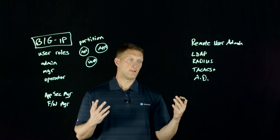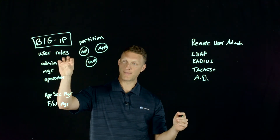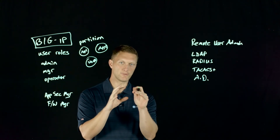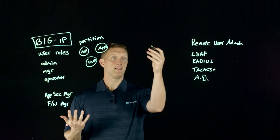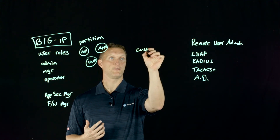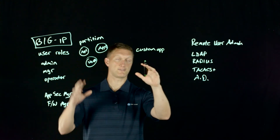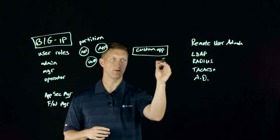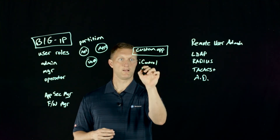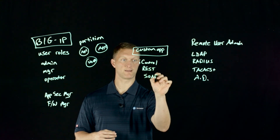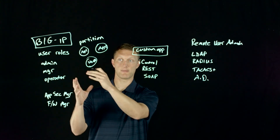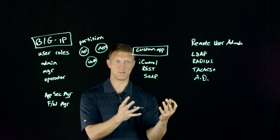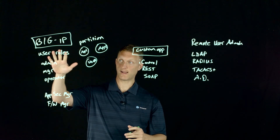Some people say they don't want full admin permissions but want something more than the manager role — they need a configurable, custom role. In that case, you could build your own custom app — almost like a middleware — that interacts with the BIG-IP. You can do that via iControl REST or the SOAP-based iControl. That custom app communicates with the BIG-IP and you control the access through it. So if you really need that granular access control, you can build it yourself.